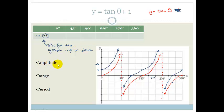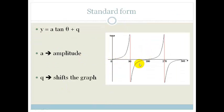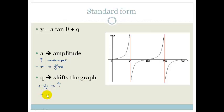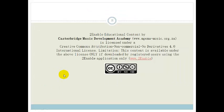Adding 1 shifts the graph up or down — just like with sine, cosine, parabola, and hyperbola. The amplitude is still not relevant, the range is still minus infinity to positive infinity, and the period is still 180 degrees. In summary, for y equals A tan theta plus Q: A affects the steepness — the bigger the A, the steeper the gradient. A negative A flips the graph across the x-axis. Q shifts the graph — positive Q shifts up, negative Q shifts down. Grade 10s, that's it for the tan graph — go and practice, and do the assessment at the end of the section.